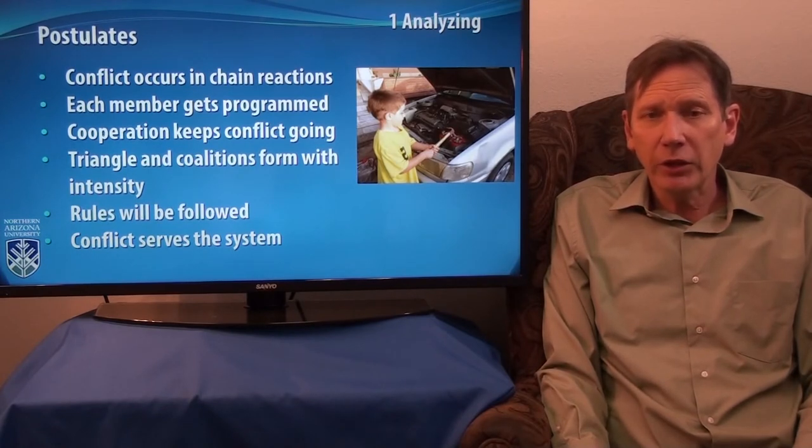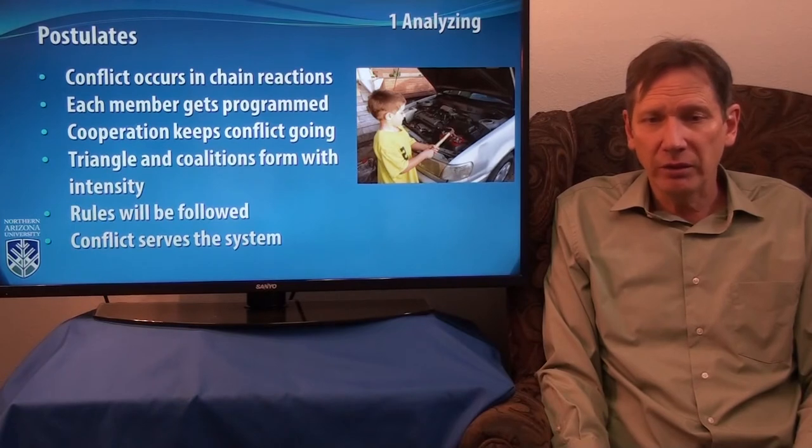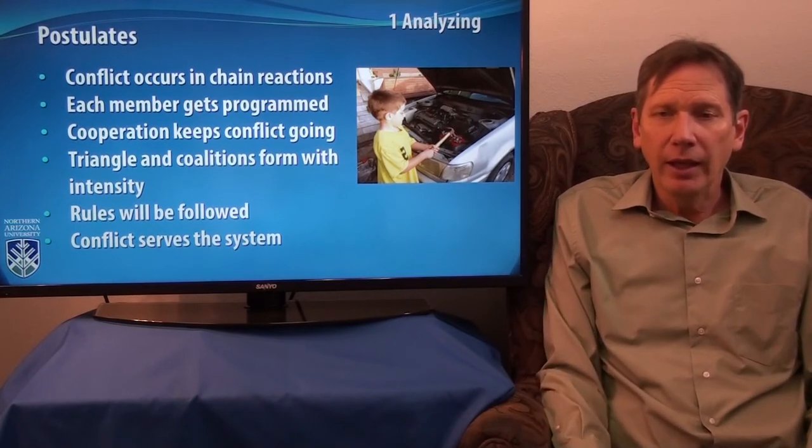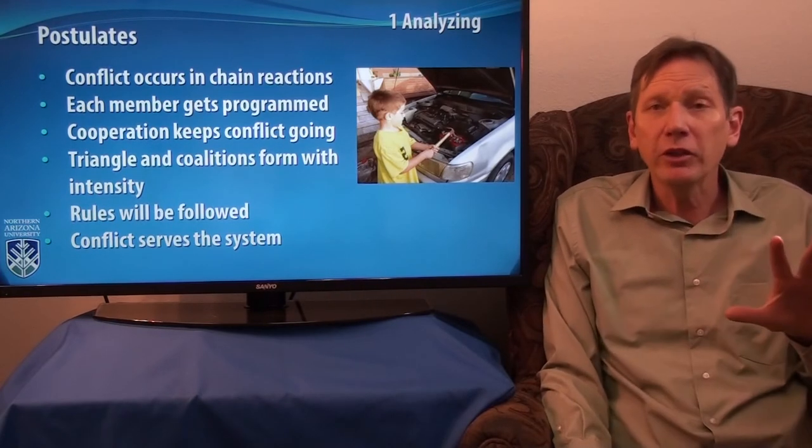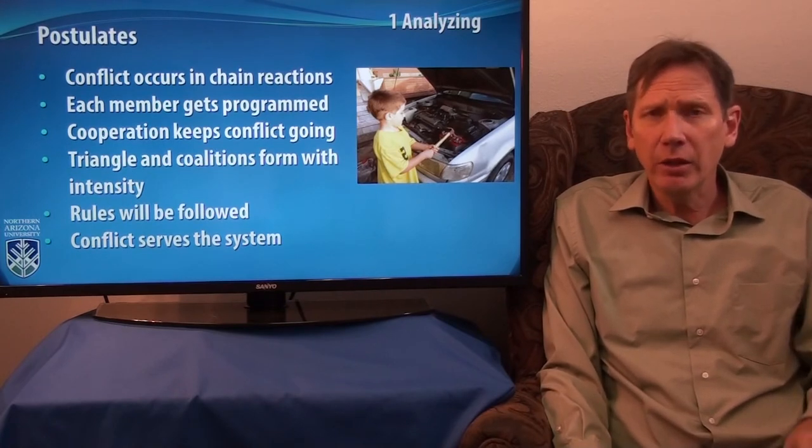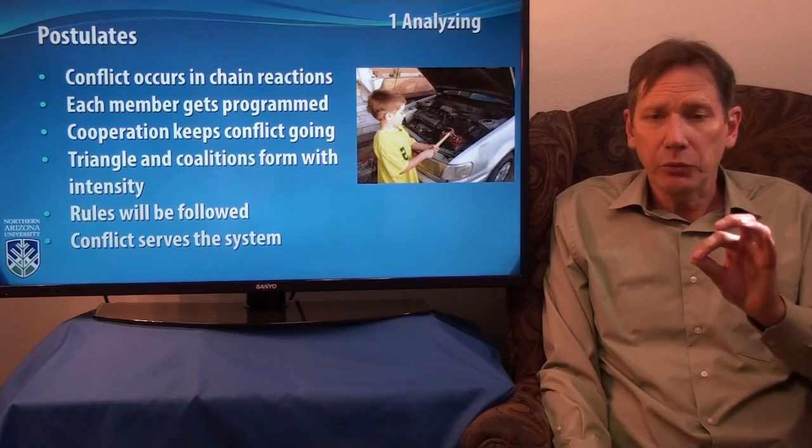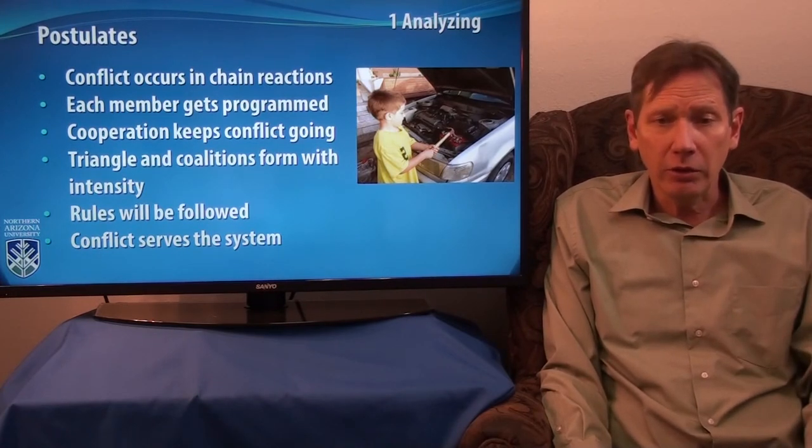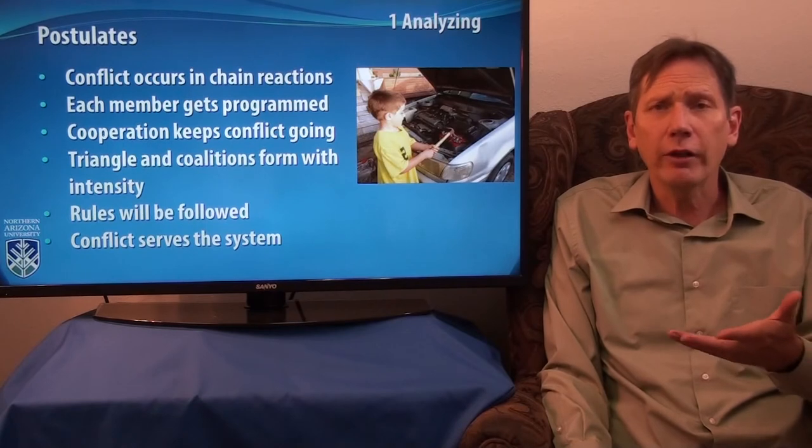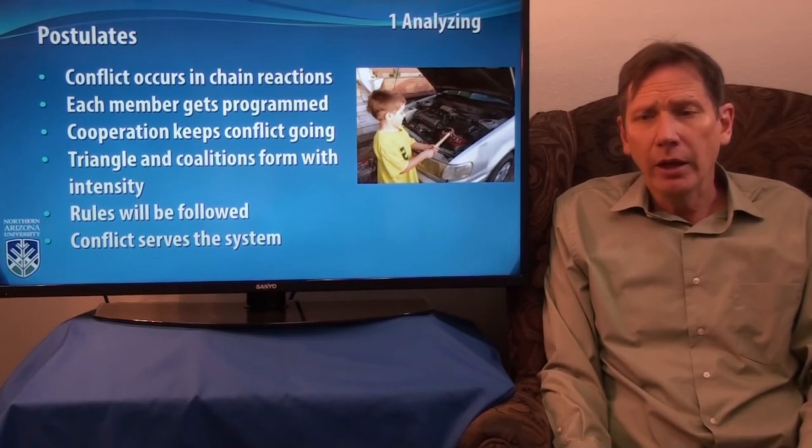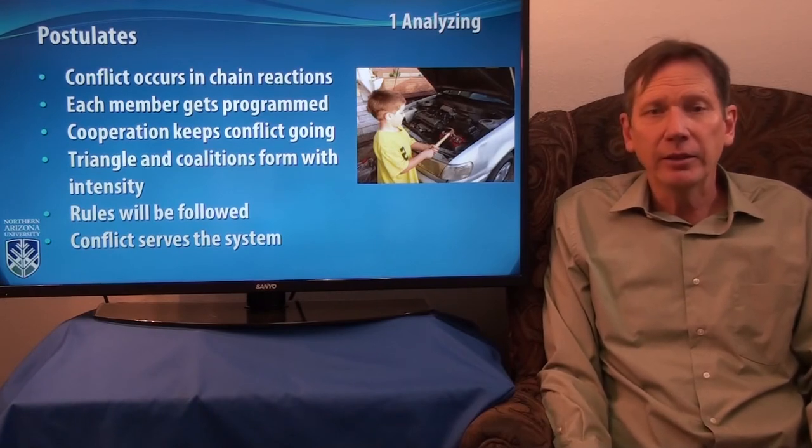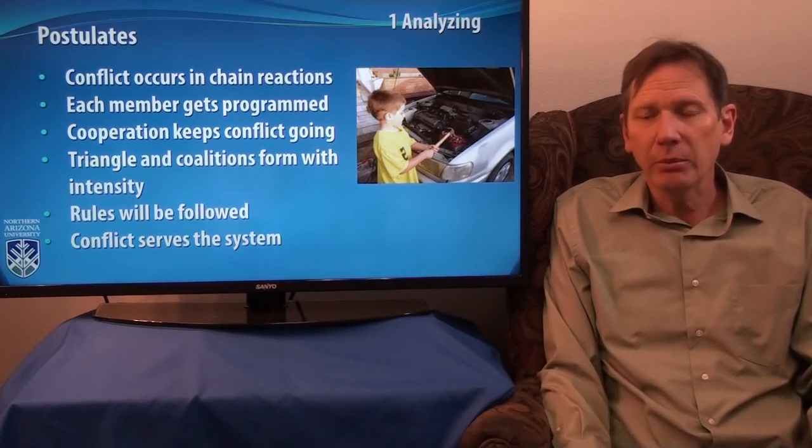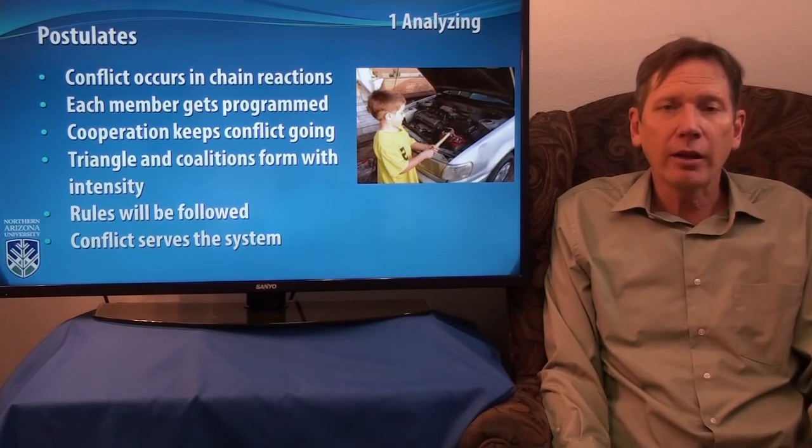Triangles, conflict triangles and coalitions will form as a conflict gets more and more intense. Essentially triangles and coalitions are people bonding together, taking sides in the conflict. The rules of the conflict will be followed even if they don't really work for the organization or the family. We typically have these rules and we stick with them. Conflict often serves the system in some way. Sometimes it helps to resolve problems, so conflict is allowed to happen and engineers can disagree about things and bring those to managers or to a committee to solve problems.